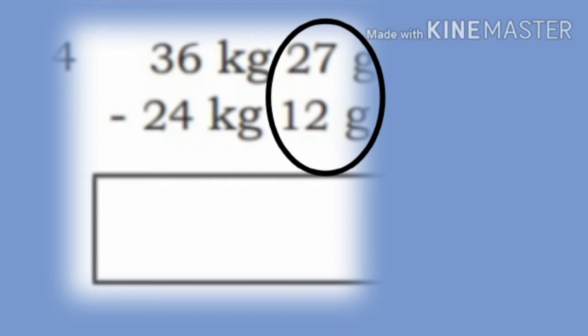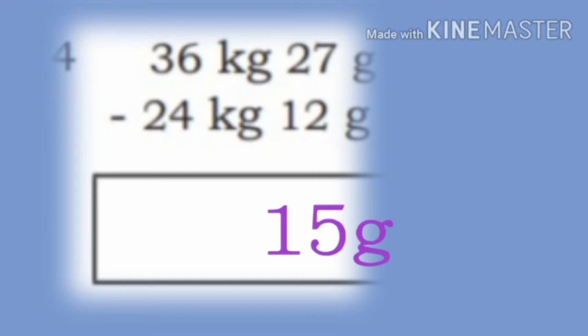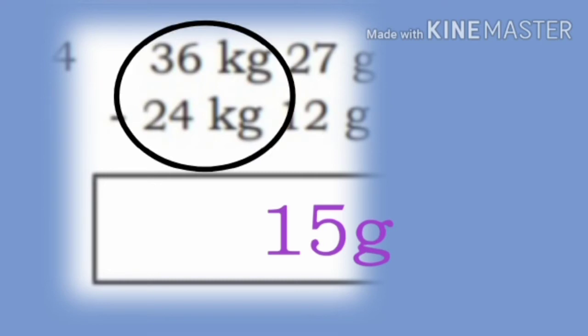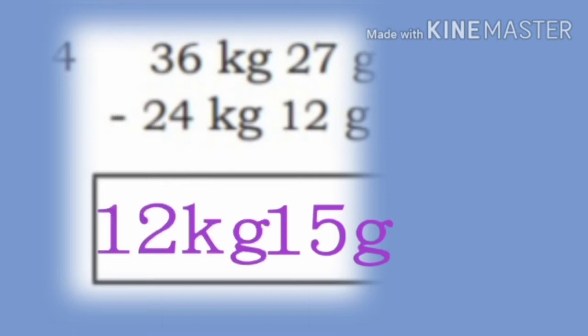First we subtract grams from grams: 27 minus 12 equals 15 g. Next subtract kilograms: 36 minus 24 equals 12 kg. So the answer is 12 kg 15 g.